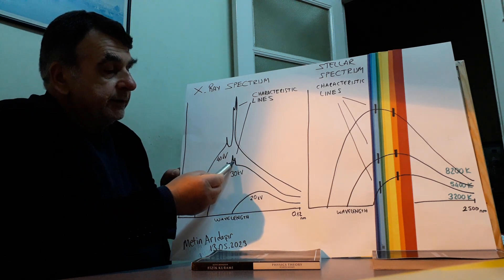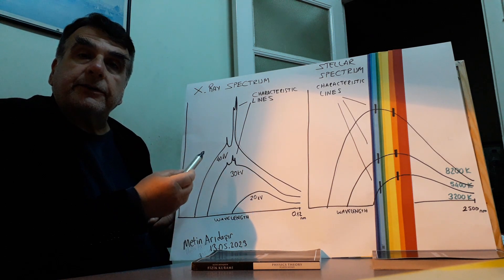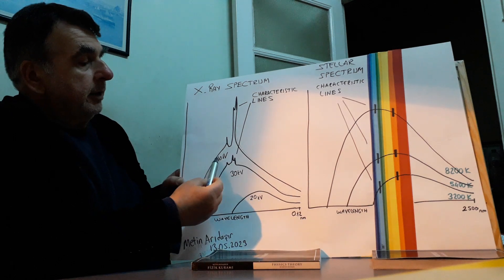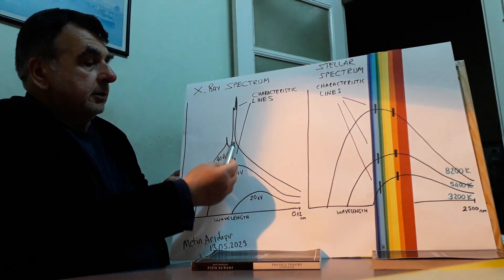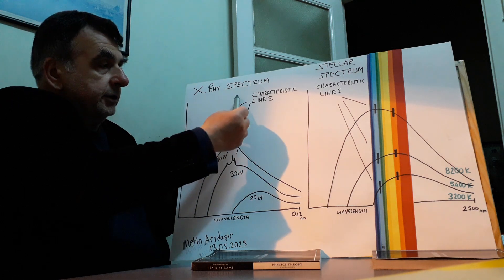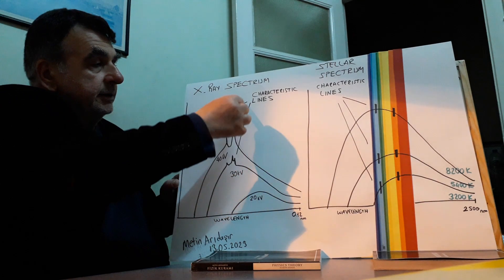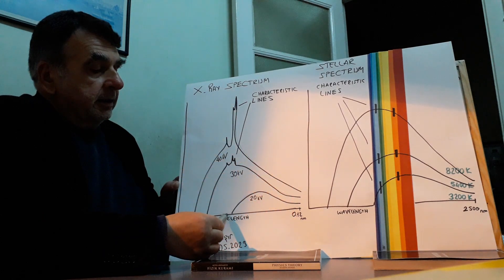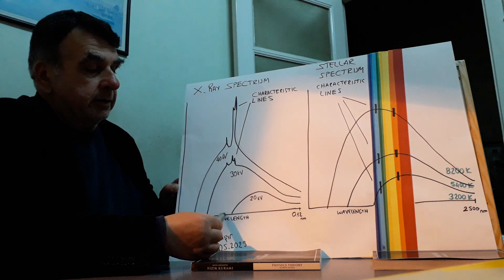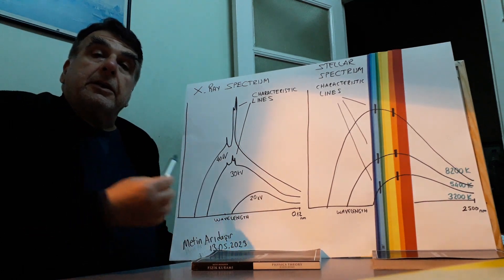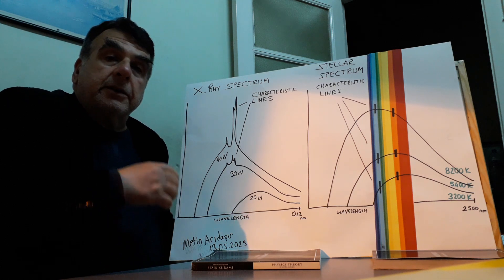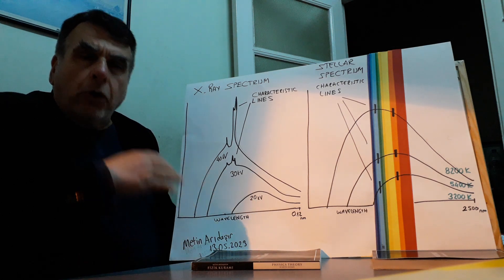What these characteristic lines here? 40,000 volt applied voltage, characteristic lines. Their wavelengths don't change, don't shift.